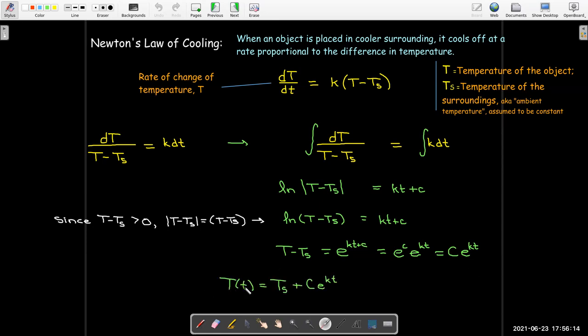So the temperature of the object is the temperature of the surroundings plus some constant C times e to the kt. Now, since this is cooling, k should be negative.